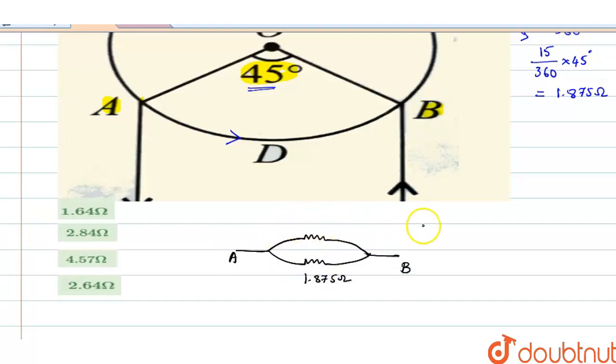The remaining part: totally it is 15 ohms, so 15 minus 1.875 gives you 13.125 ohms. So this part has 13.125 ohms.